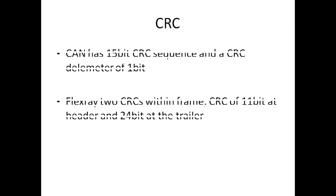What about CRC? CAN has a 15-bit CRC sequence followed by a 1-bit CRC delimiter. Both transmitters and receivers use a predefined polynomial so they can easily check the CRC. FlexRay has two CRCs within a frame: an 11-bit CRC at the header and a 24-bit CRC at the trailer.